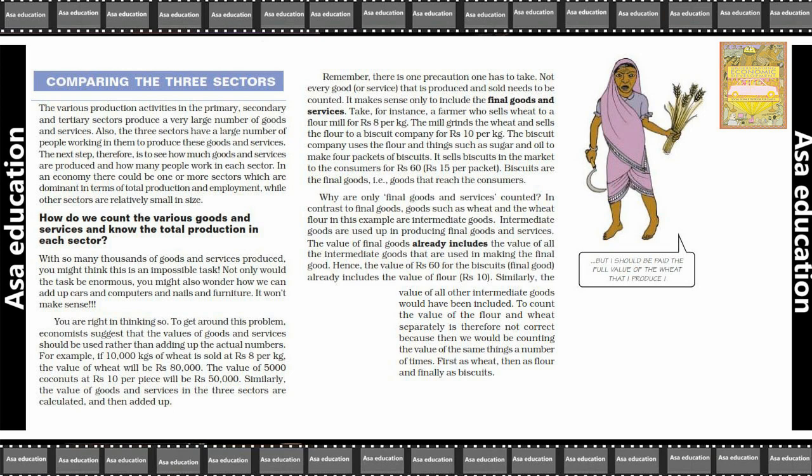Take for instance, a farmer who sells wheat to a flour mill for Rs. 8 per kg. The mill grinds the wheat and sells the flour to the biscuit company for Rs. 10 per kg. The biscuit company uses the flour and other things such as sugar and oil to make 4 packets of biscuits. It sells biscuits in the market to consumers for Rs. 15 per packet, i.e., Rs. 60 total.